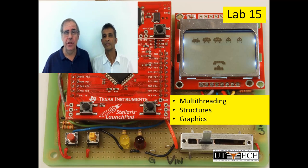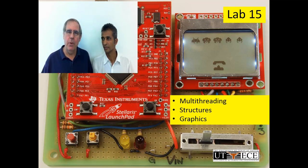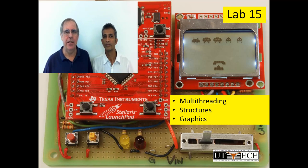The graphical structures, the images that we generated on the screen, we used a C programming concept called structures. And we rendered those structures to produce the graphical image. So again, the purpose of lab 15 was to put all the concepts together. The D to A, the A to D, the interrupts, the C programming, the testing, all of that into one program that's fun to play.